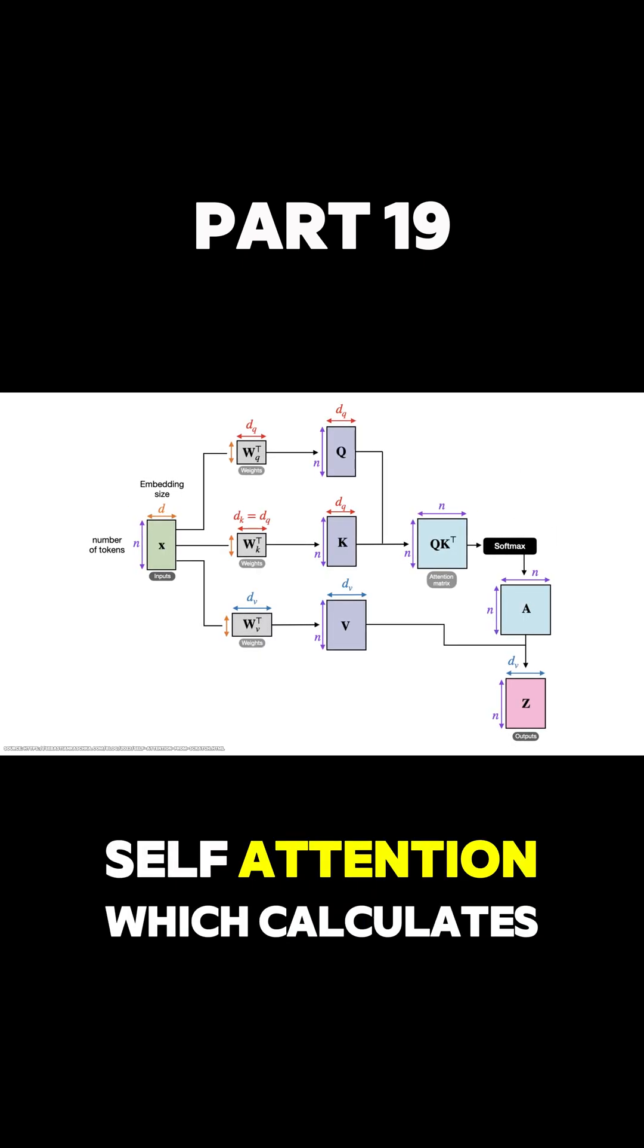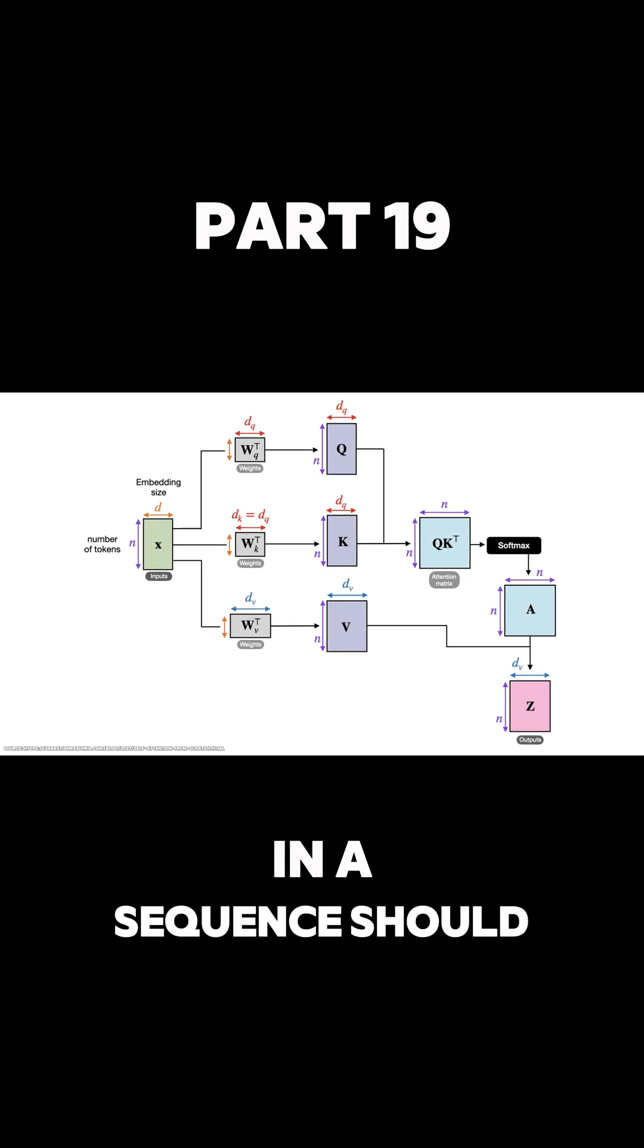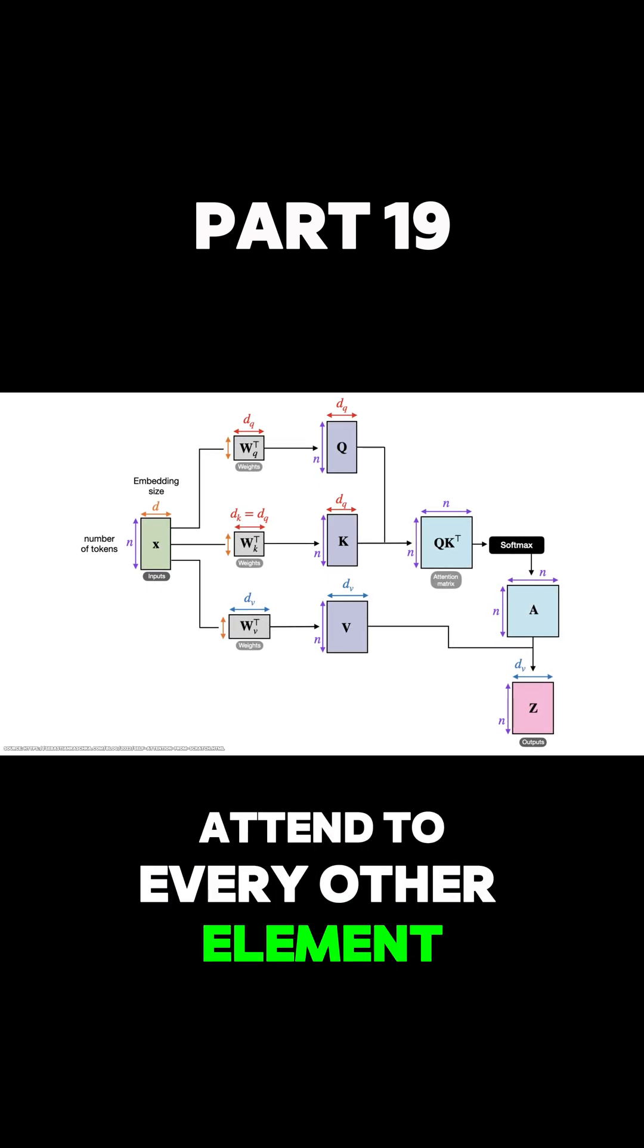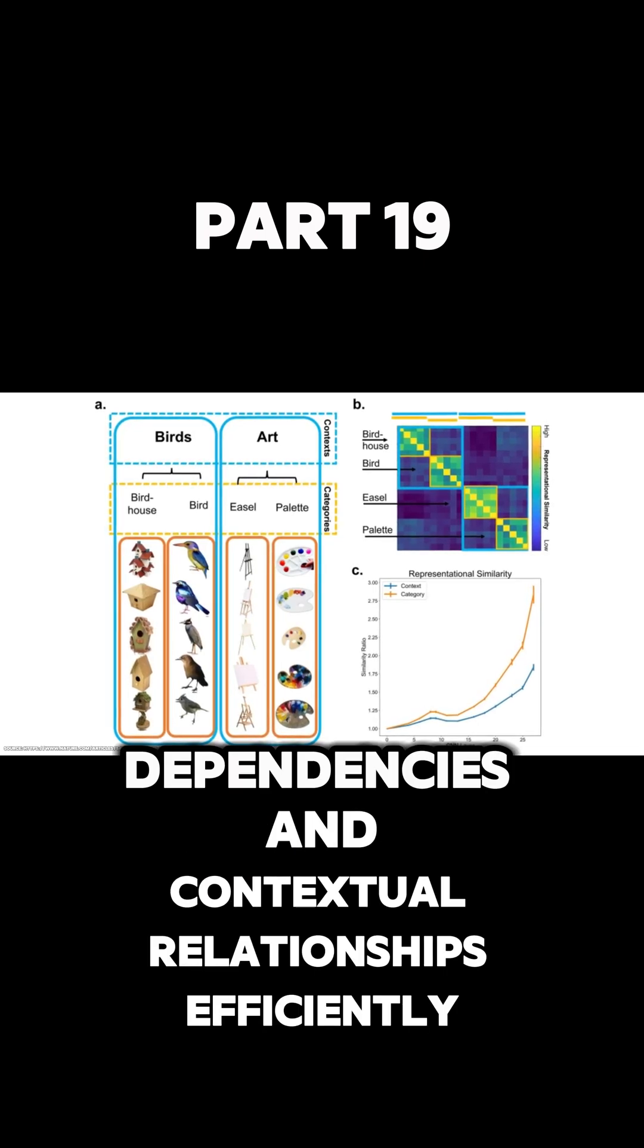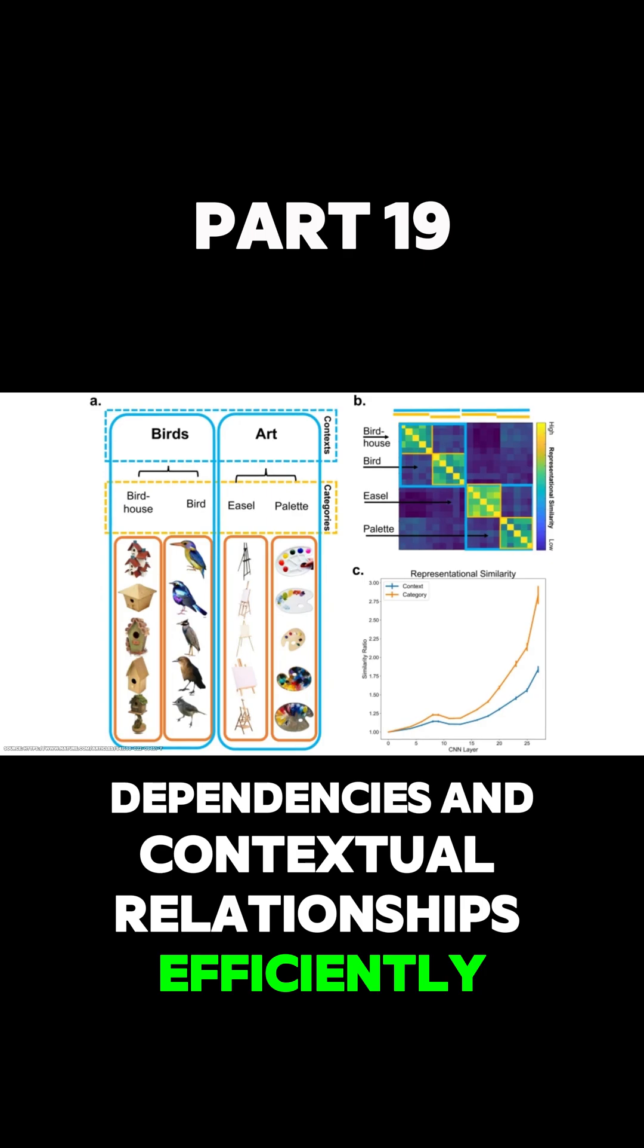The key idea is self-attention, which calculates how much each element in a sequence should attend to every other element. This allows the model to capture long-range dependencies and contextual relationships efficiently.